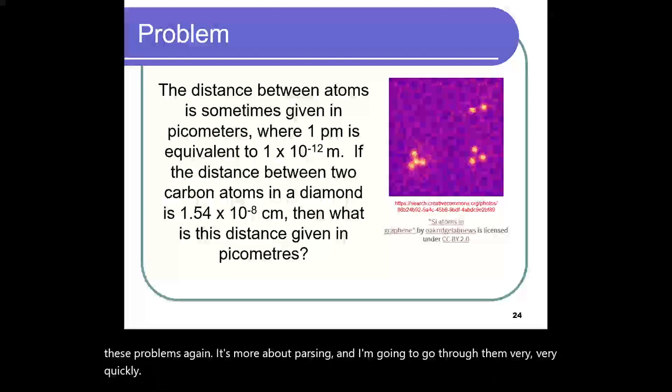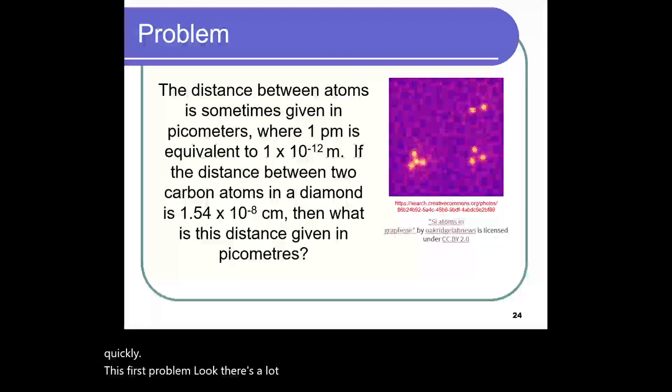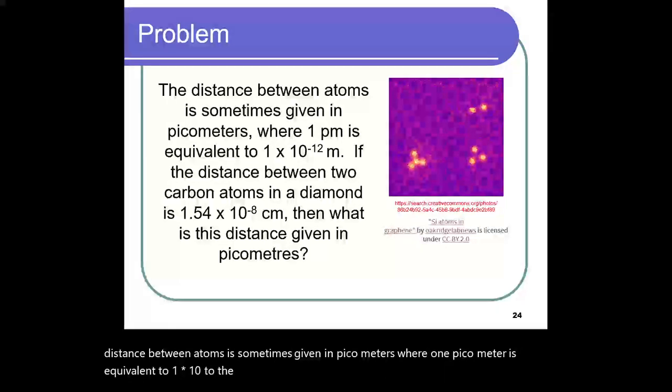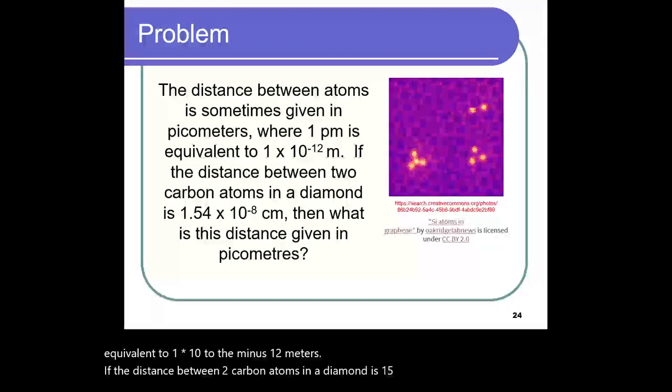This first problem, look, there's a lot of numbers. There are things bouncing around. The distance between atoms is sometimes given in picometers, where one picometer is equivalent to 1 times 10 to the minus 12 meters. If the distance between two carbon atoms in a diamond is 1.54 times 10 to the minus 8 centimeters, then what is this distance given in picometers?